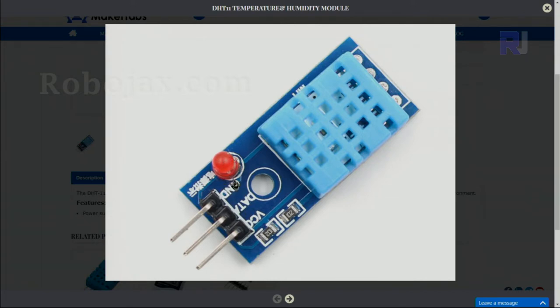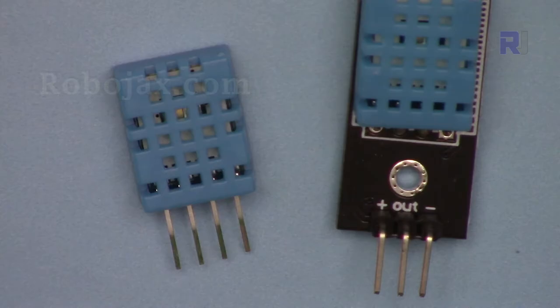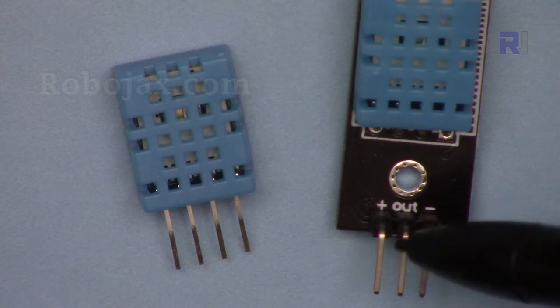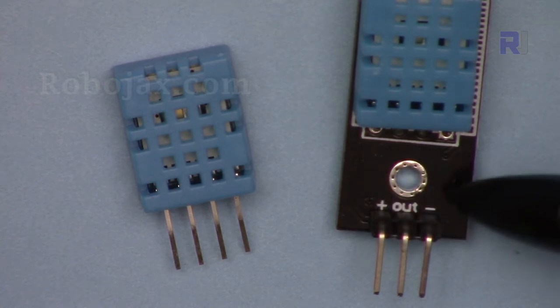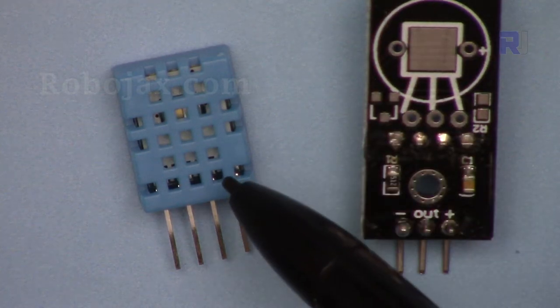Usage of all of them will be the same except you have to pay attention to the pins. Here VCC data, this is output and the ground is on the other side, while in this one the plus is on the other side VCC and ground or negative is on this side.